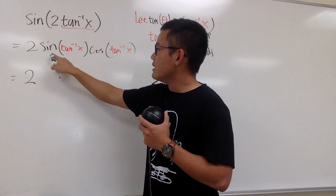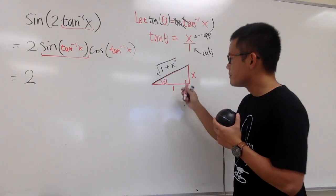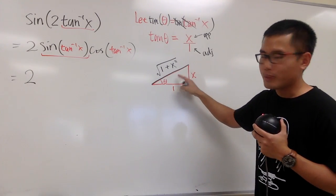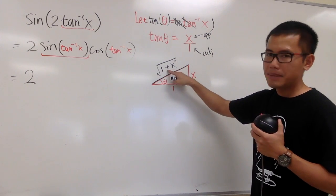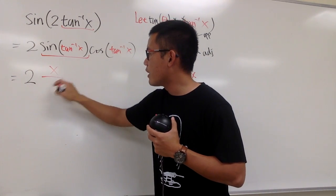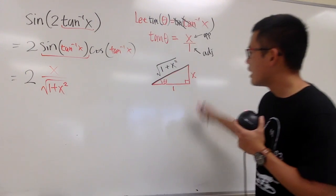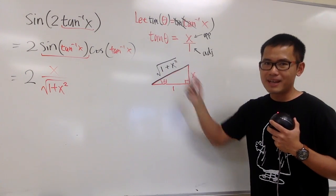Let's do it. Right here, this is 2. Sin(tan⁻¹x), this right here—sine is equal to opposite over hypotenuse. So for this term, it's going to be x over √(1 + x²). Opposite over hypotenuse.